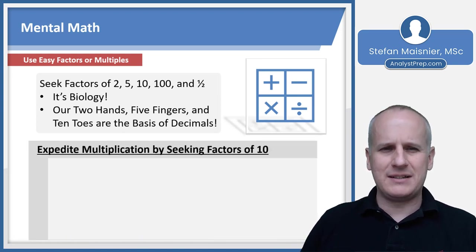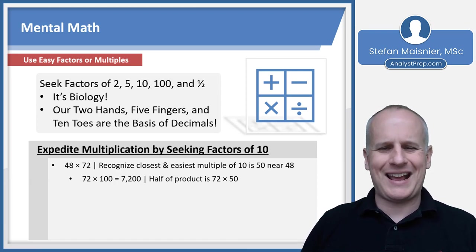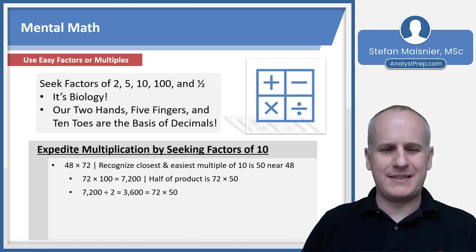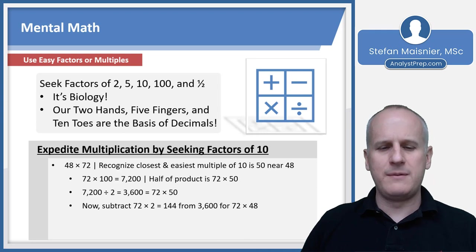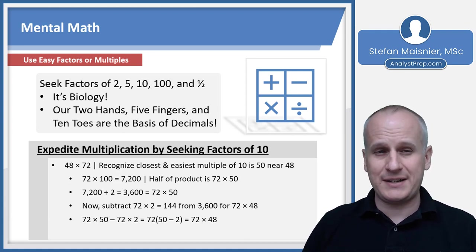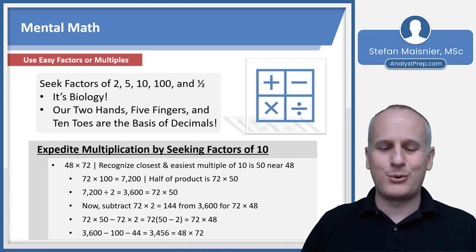Now, you can also expedite multiplication by seeking similar factors of 10. So 48 times 72, you might be able to recognize that the easiest multiple of 10 near 48 is 50. So I could just say 72 times 100 is 7,200, and half of that product is going to be 72 times 50. So I know that 7,200 divided by 2, or 3,600, is going to be equal to 72 times 50. Now, I just have to subtract two 72s to get to 48 times 72, and 72 times 2, 70 times 2 is 140, 2 times 2 is 4, so 72 times 2 is 144, and we'll subtract that 144 from the 3,600, which was our 72 times 50, to get to the result of 72 times 48. So 72 times 50 minus 72 times 2 is 72 times 48. And 3,600 minus 100 minus 44 is going to give us 3,456, which is equal to 48 times 72.